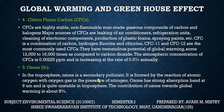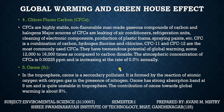The next one is ozone. In the troposphere, ozone is a secondary pollutant. It is formed by the reaction of atomic oxygen with oxygen gas in the presence of nitrogen. Ozone has a strong absorption band at 9 micrometers and is quite unstable in the troposphere. The contribution of ozone towards global warming is about 8%.